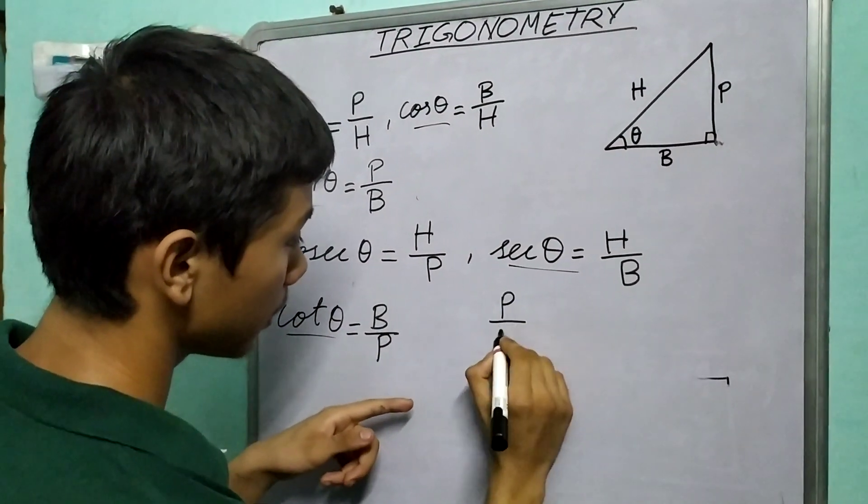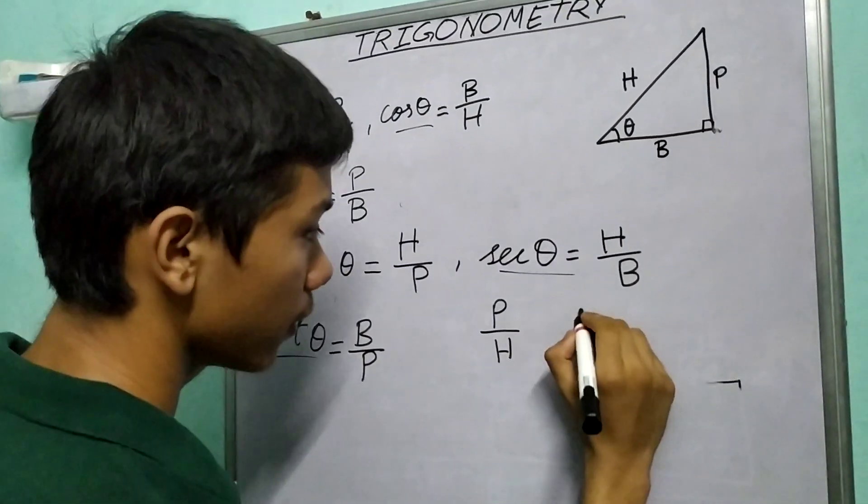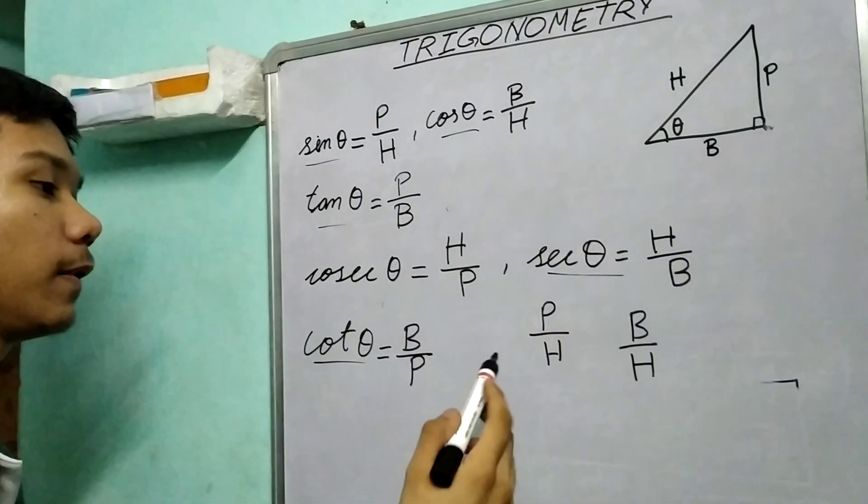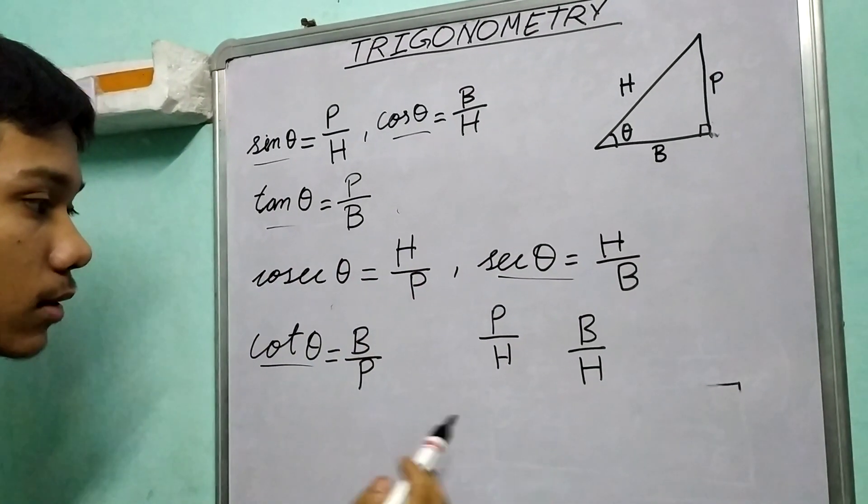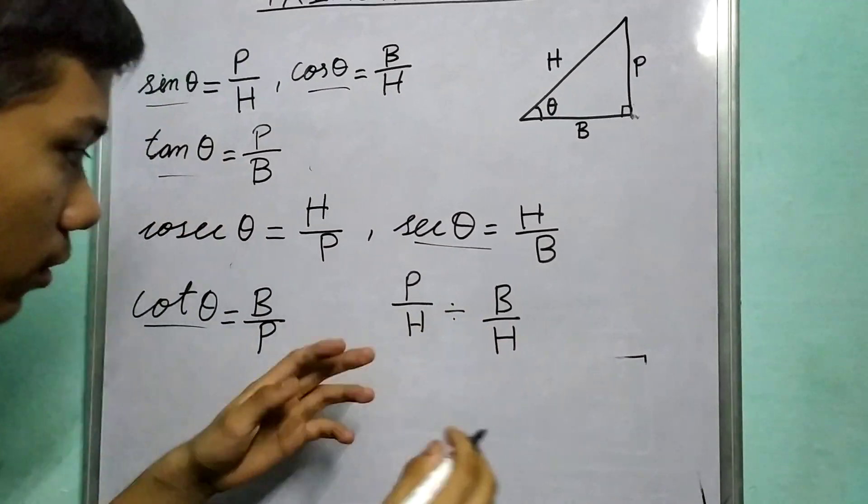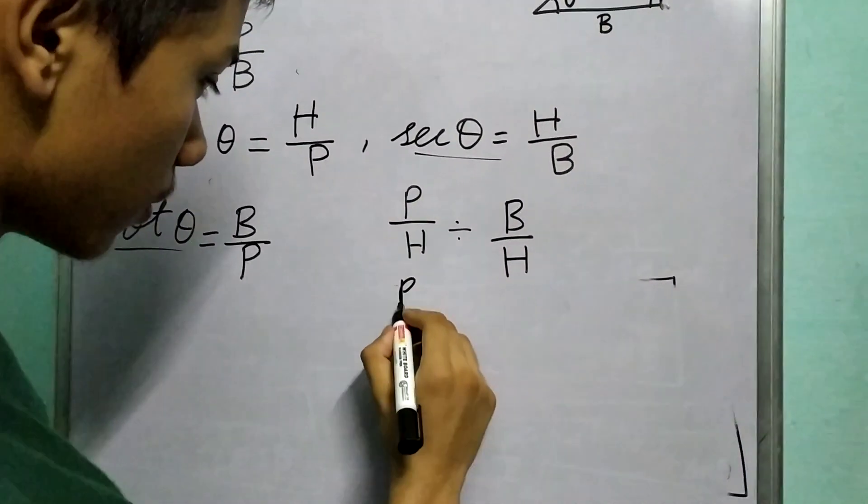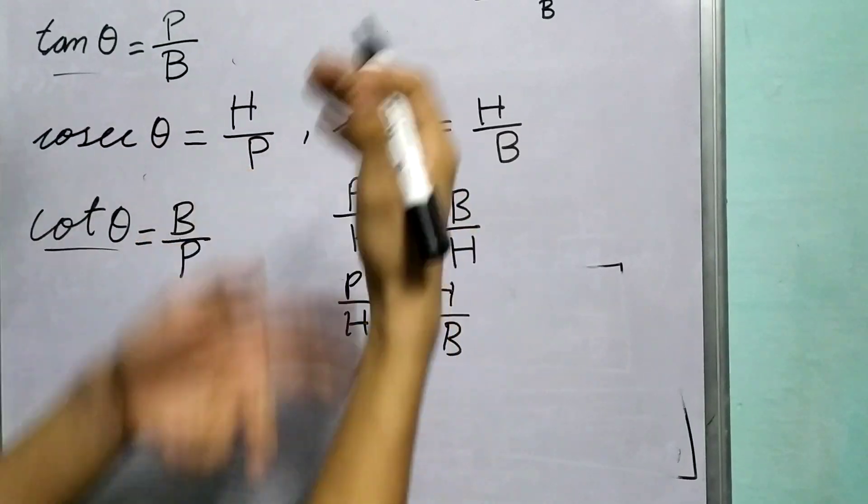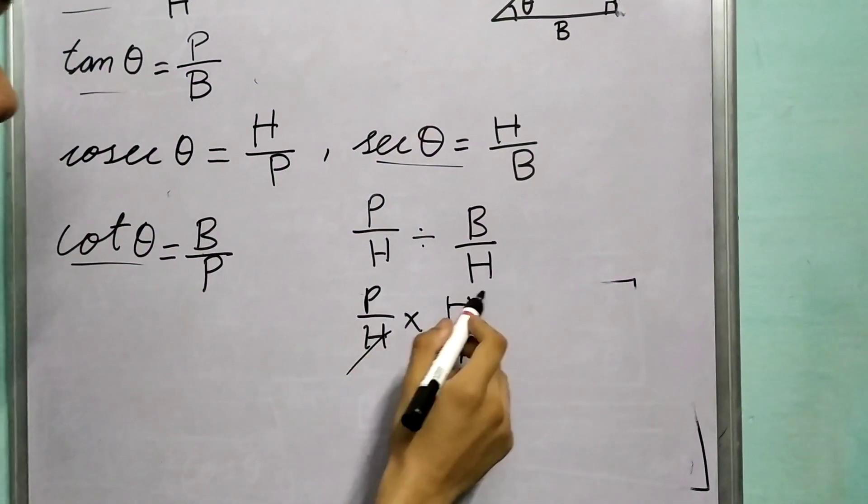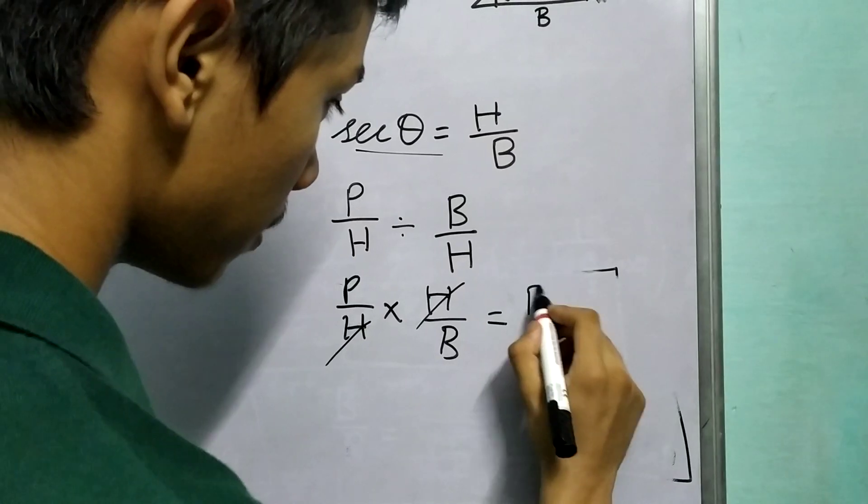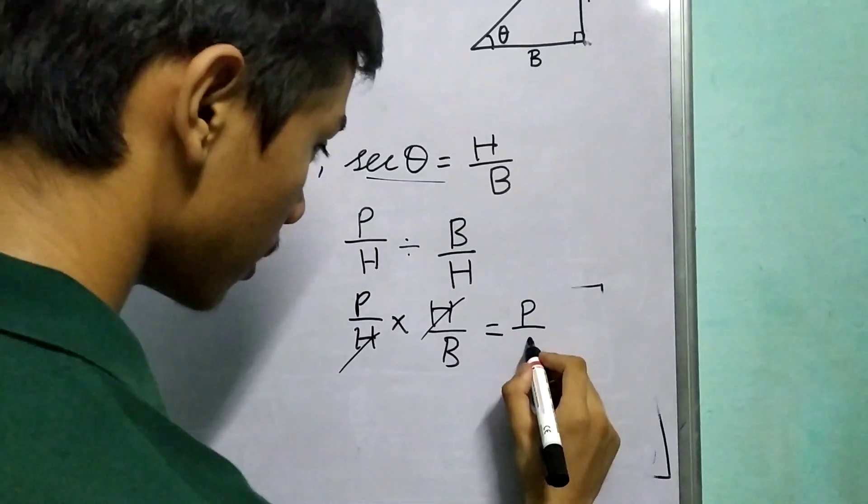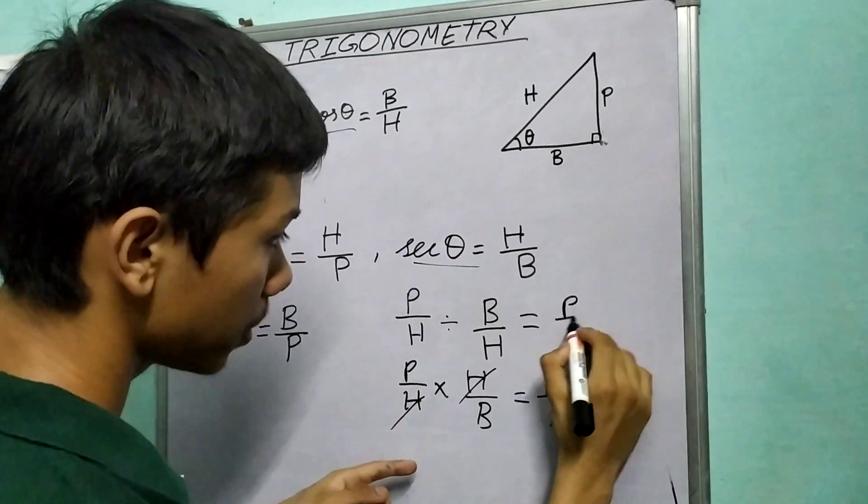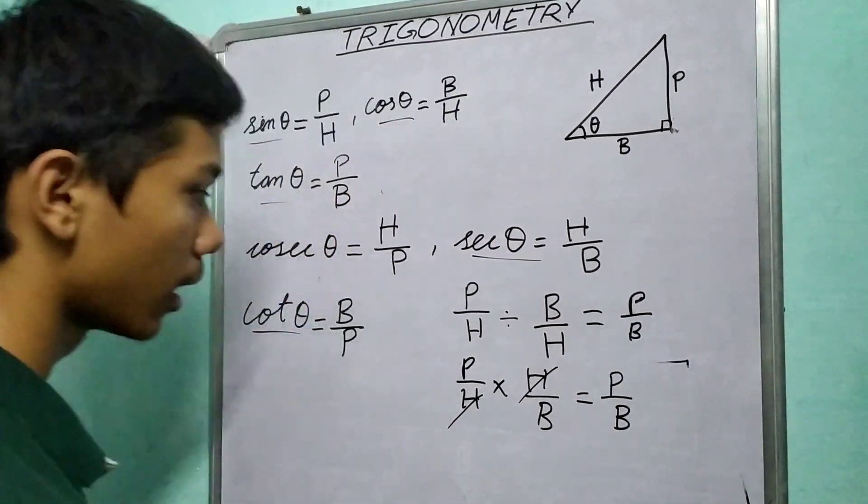See, we have P by H and we have B by H. Now what if we divide these? So essentially we are dividing these two: P by H into H upon B. We reciprocal this and multiply, so the hypotenuse cancels out and we get P by B. So you can write this also as P by B.